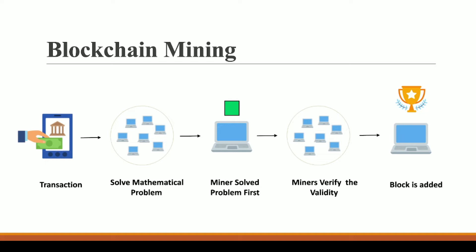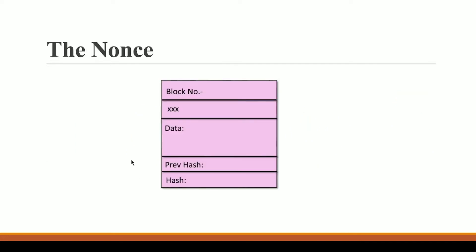Now let us understand what this mathematical problem actually is — what miners are solving. To understand this, we need to understand a new field called nonce. So far we have talked about block number, data, previous hash, and hash, but there is also a new field called nonce.